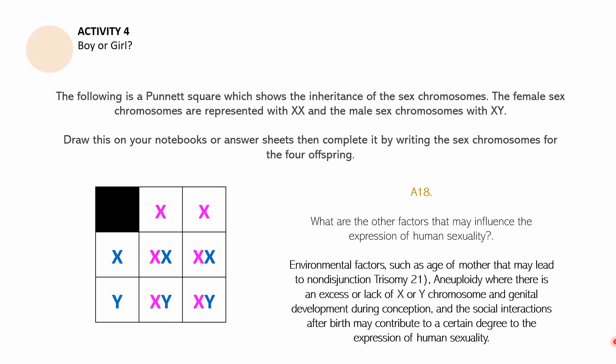For question 18, the following factors can influence the expression of human sexuality: environmental factors such as the age of the mother that may lead to non-disjunction, trisomy 21, and diploidy where there is an excess or lack of X or Y chromosomes; genital development during conception; and social interactions after birth may contribute to a certain degree to the expression of human sexuality.